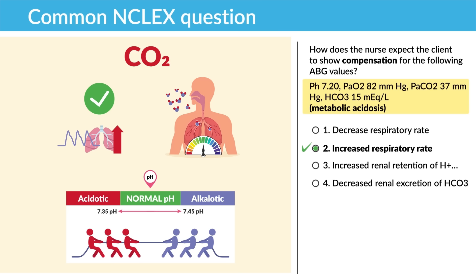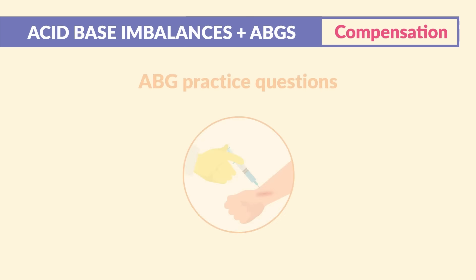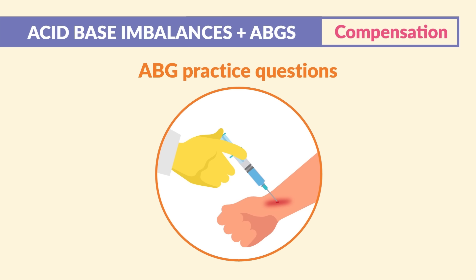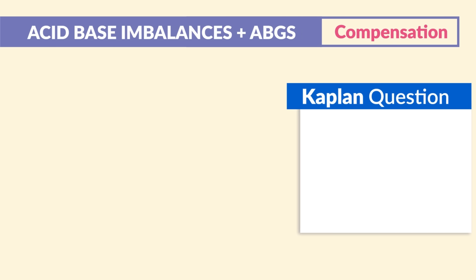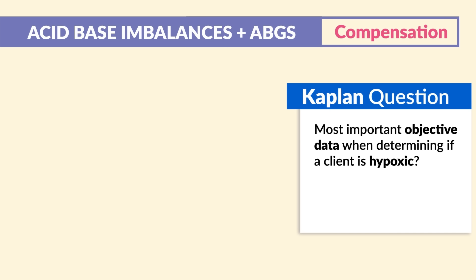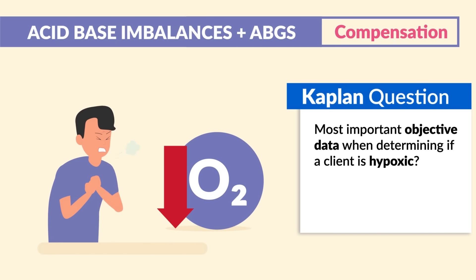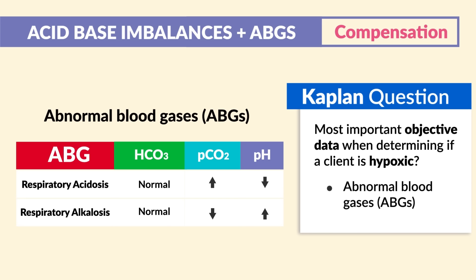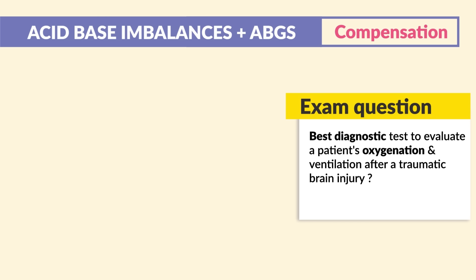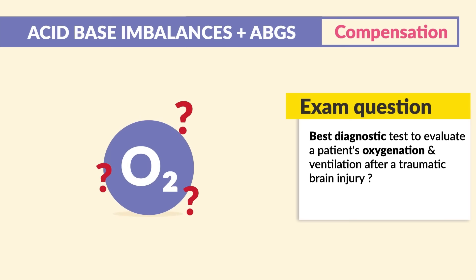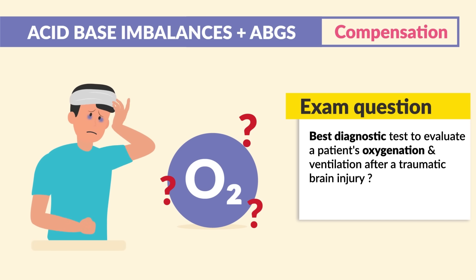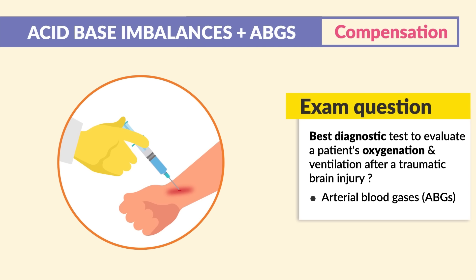A common NCLEX question gives ABG numbers for a client in metabolic acidosis and asks how the nurse expects the client to show compensation. Metabolic acidosis means they need to go into alkalosis — hulk, hulk, alkalosis — they need to breathe faster, hyperventilation. The correct answer is to increase the respiratory rate to blow off that acid, that carbon diacid. Decreasing the respiratory rate would lead to more acidosis.